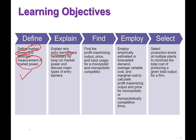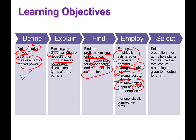We'll learn about entry barriers that are necessary for long-run market power and discuss major barriers to entry. We will also find profit-maximizing output, price, and input usage for monopolist and monopolistically competitive companies, and empirically estimate and forecast demand functions, average variable cost, and marginal cost.